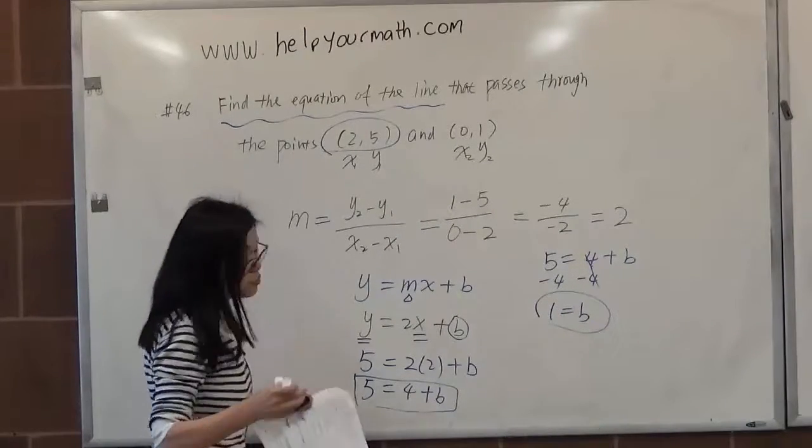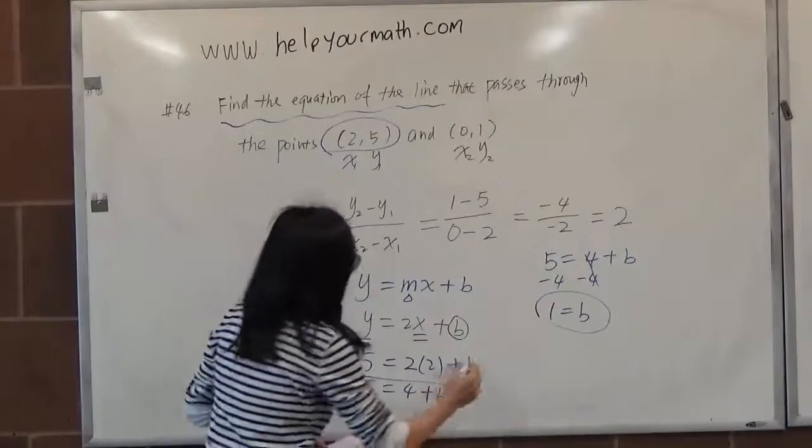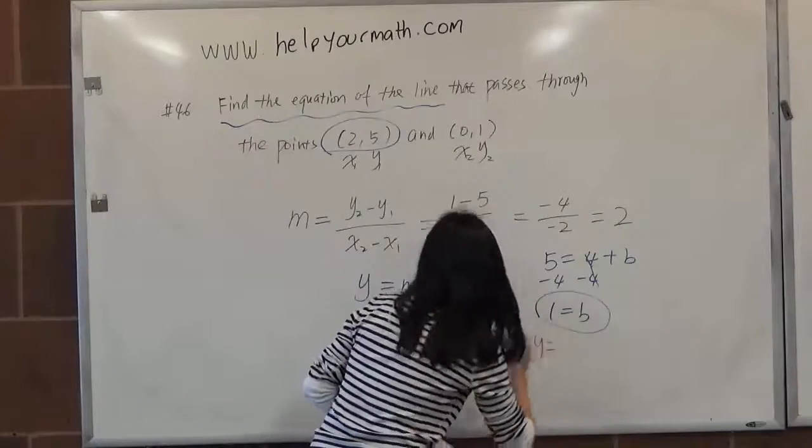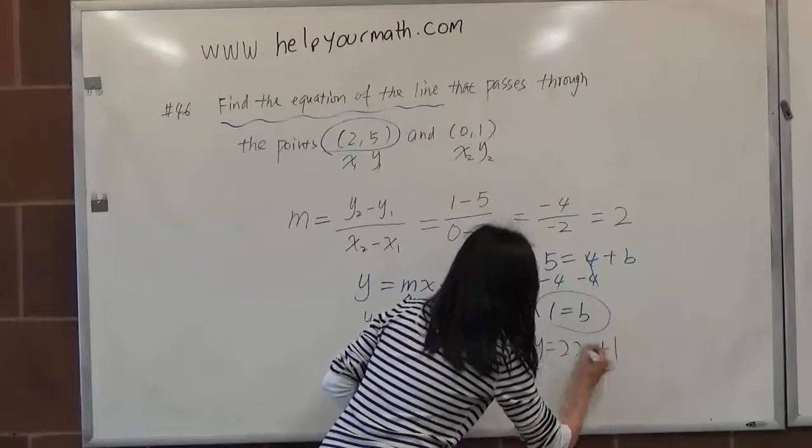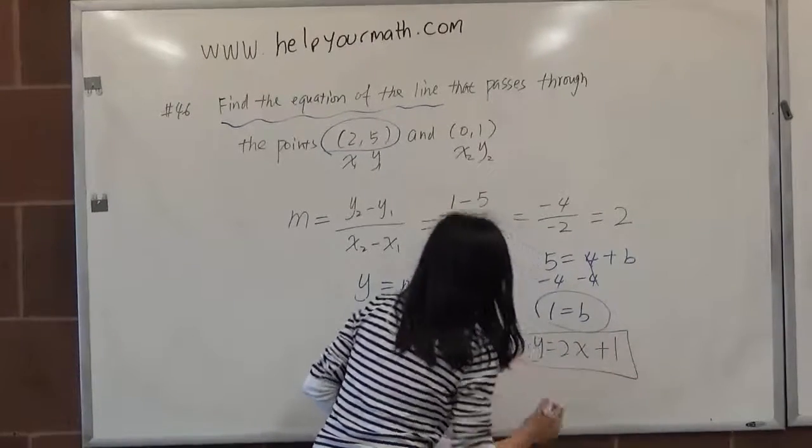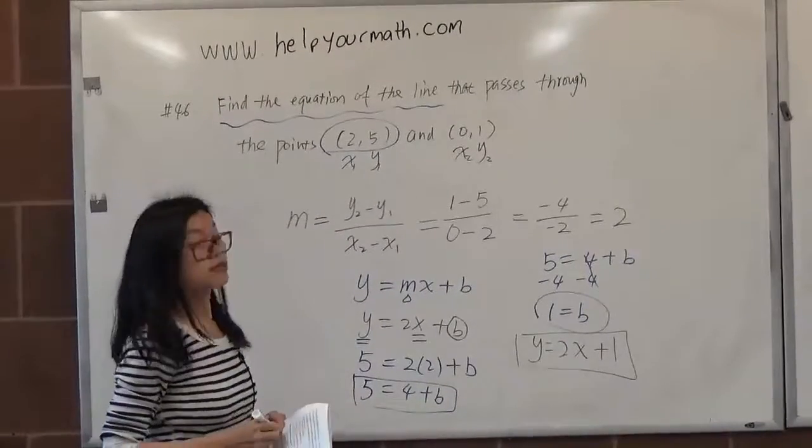Therefore, what's the equation of the line? It will be y equals, the m is 2, then x plus the b equals 1. So that will be the answer for this question. Thank you.